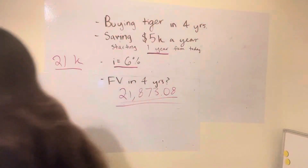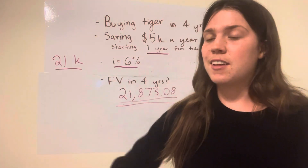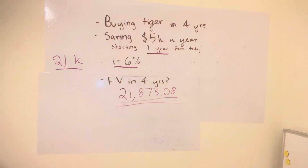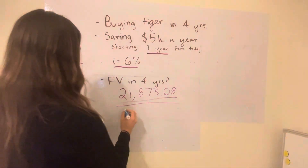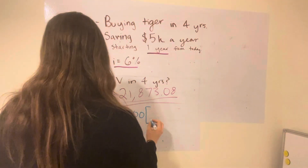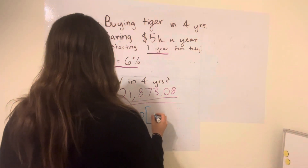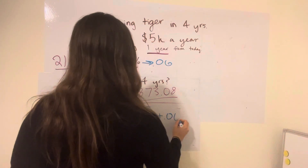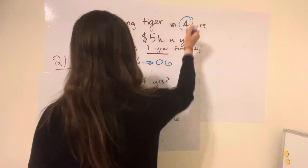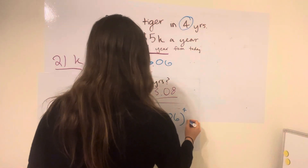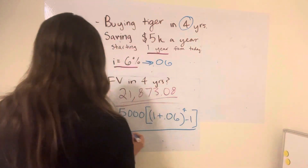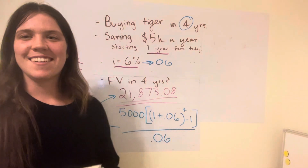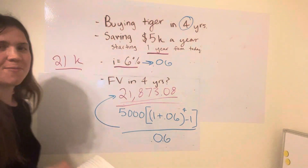This is the formula you can use. It takes a little more time, so I prefer the calculator, but just so you know. It's going to be our payment — how much we're saving every year — so $5,000. Then inside the parenthesis, we're going to go one plus the interest rate as a decimal: 1 plus 0.06, to the fourth power. Then we subtract 1, and divide by 0.06 again. That should give you the same answer. If you wanted to use the formula, that's how you would do it. Ordinary annuity.